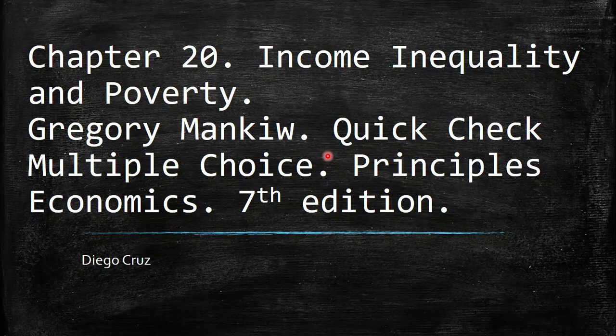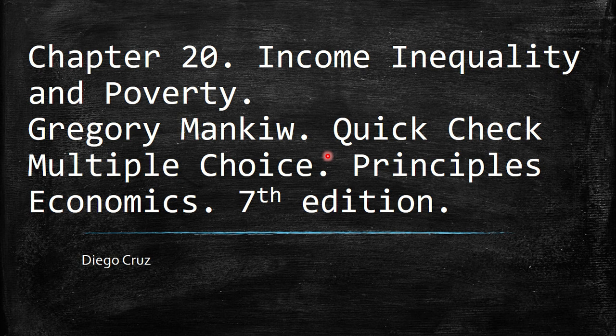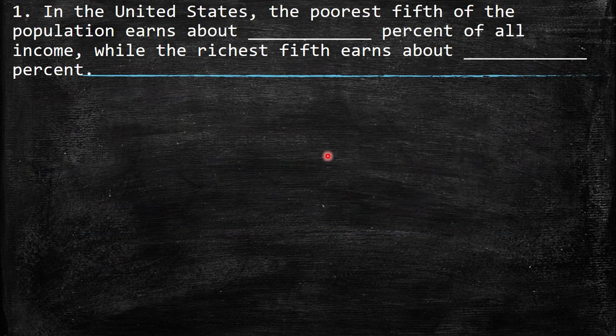Hi everyone, welcome to this video. We're going to discuss the Quick Check Multiple Choice for Chapter 20. This is from the book Principles of Economics. The chapter is about income, inequality, and poverty.